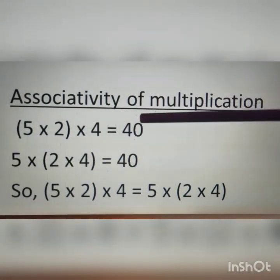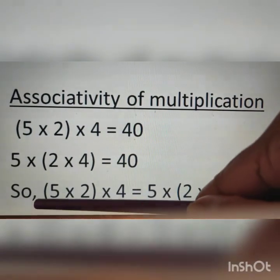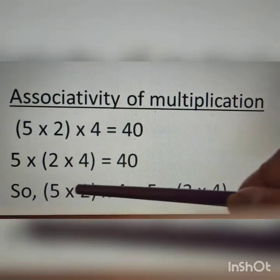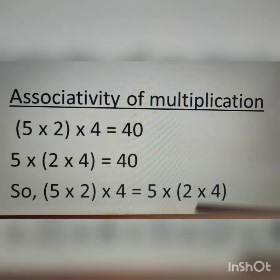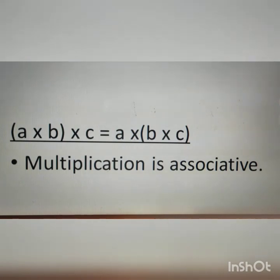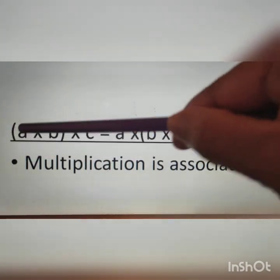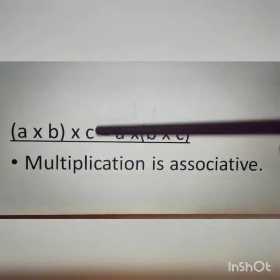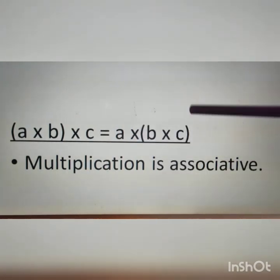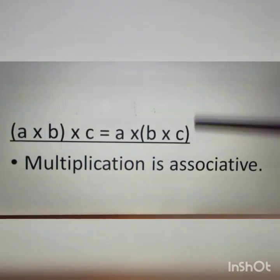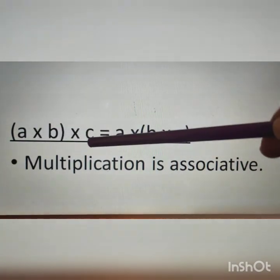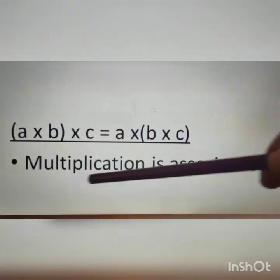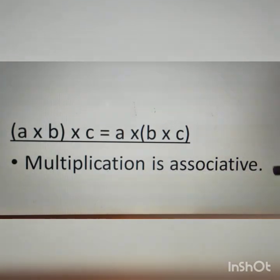The values are the same, so we can write (5 × 2) × 4 = 5 × (2 × 4). In general, (a × b) × c = a × (b × c), where a, b, and c are any whole numbers. Therefore we can say multiplication is associative.